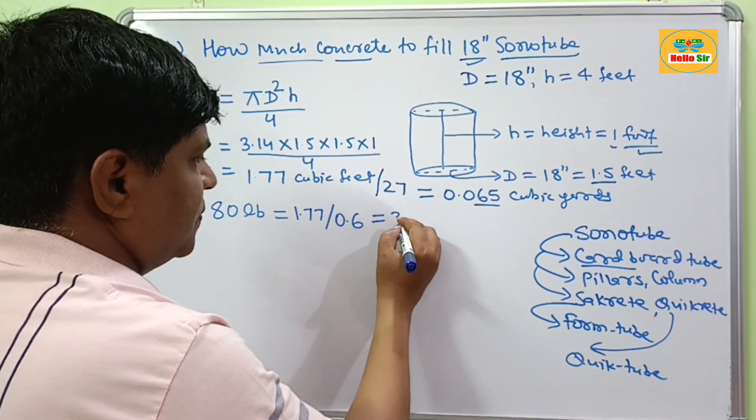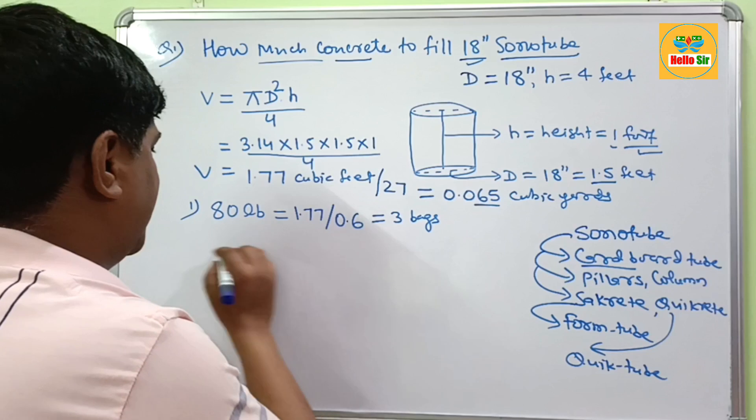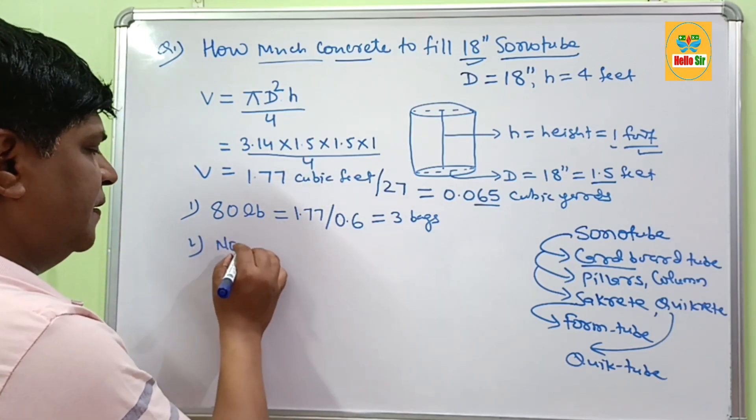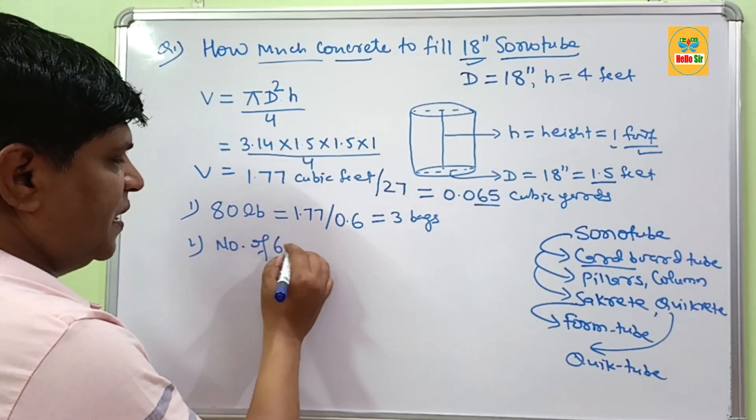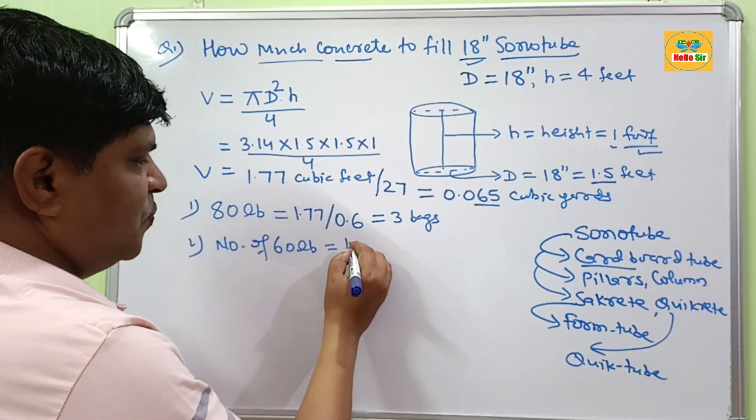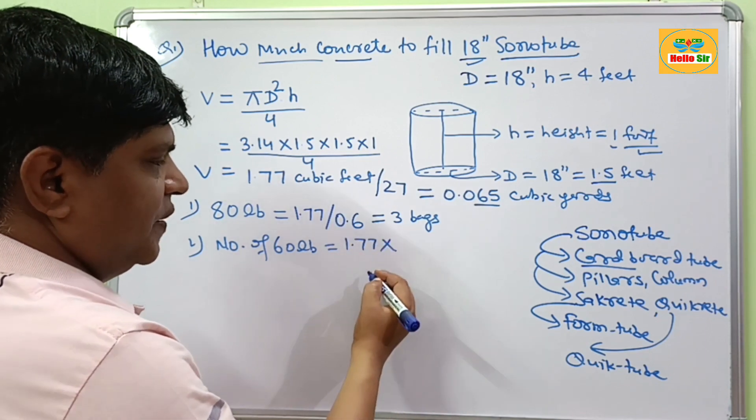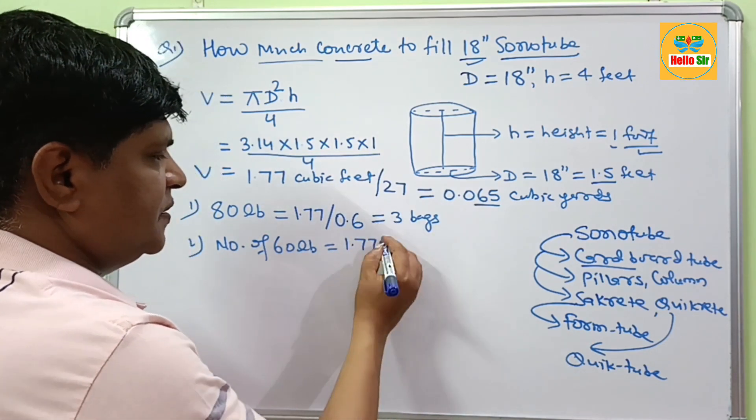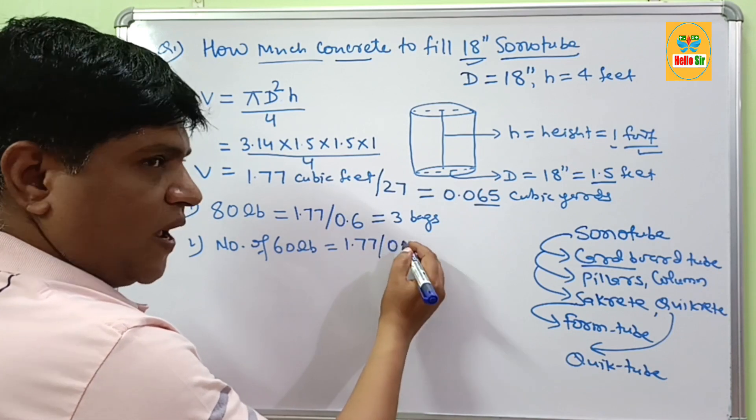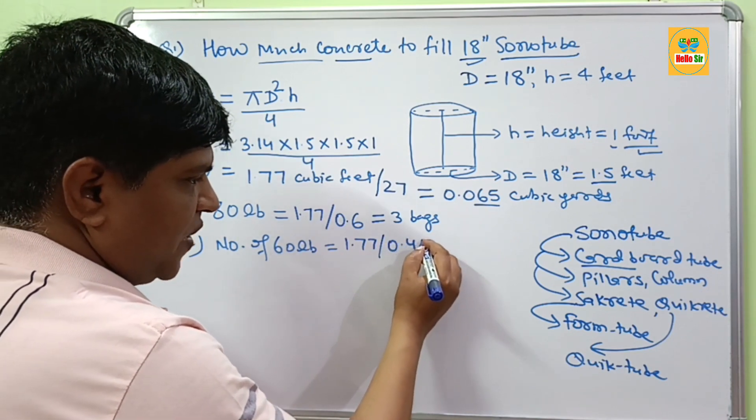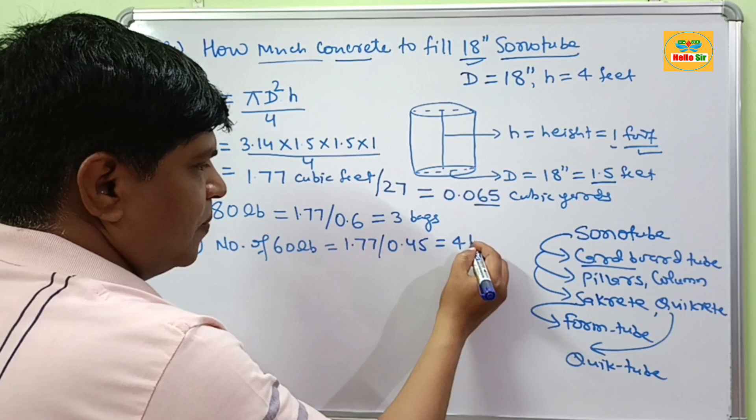And if you want to calculate number of 60 lb bags, then 1.77 cubic feet is divided by fill per bag which is 0.45. This will come about 4 bags.